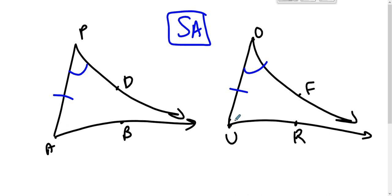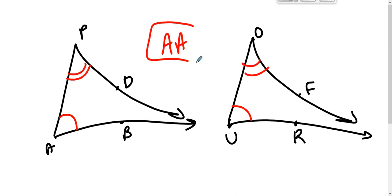It is also true that if this angle is congruent to that one and this angle is congruent to that one, then you have angle-angle congruence for asymptotic triangles.